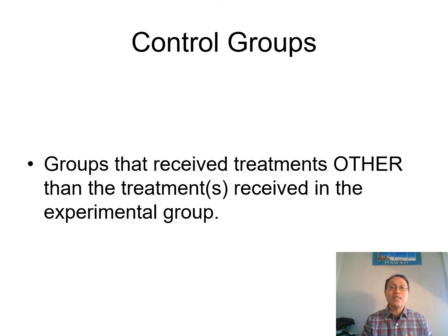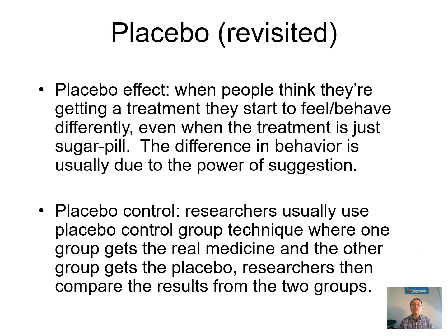One type we've talked about is the placebo control group. The placebo effect is when people receive some sort of bogus treatment, they think they're getting an effective treatment, and therefore they start to behave or feel differently. The difference in behavior is due to just the power of suggestion, and this power of suggestion is very powerful. Sometimes it can convince participants that a treatment is effective to the point that it even exceeds the effect of a real treatment.